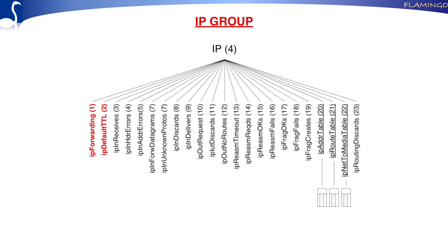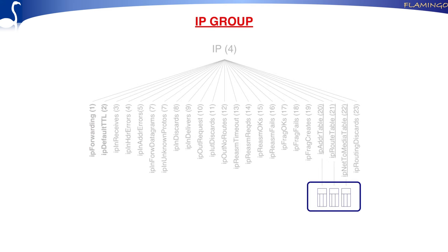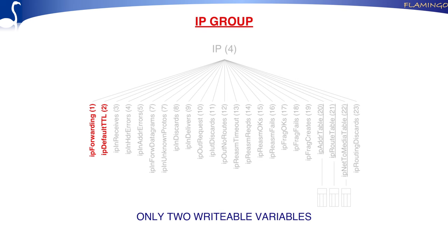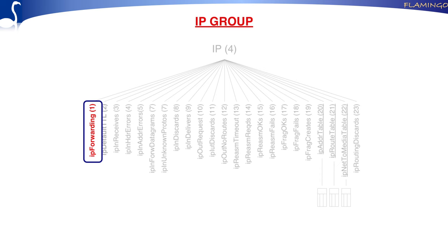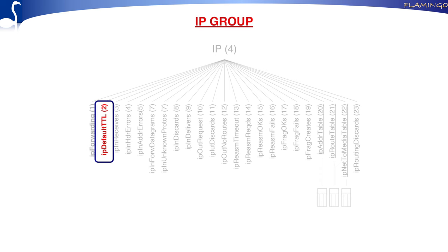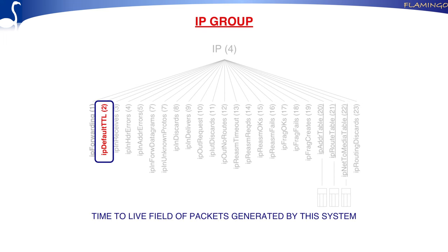The IP group has lots of variables and some tables. There are only two writable variables. The first is ipForwarding, which indicates whether this system is forwarding traffic — if it is, it's a router; if not, it's an end system. The second is ipDefaultTTL, the time-to-live field filled into packets generated by this system, usually something like 30.